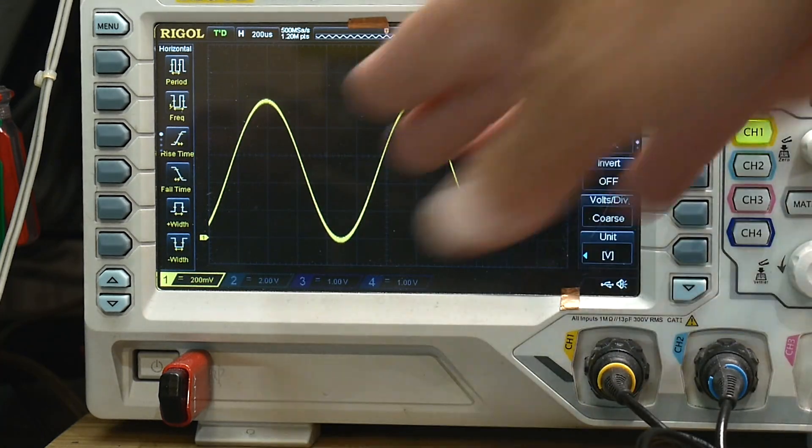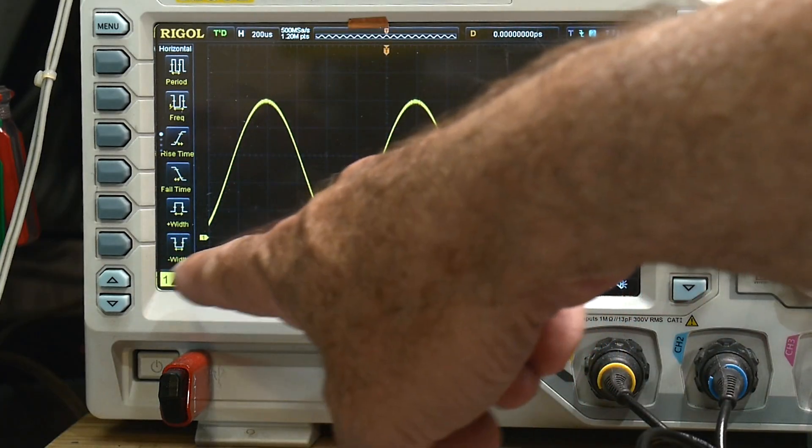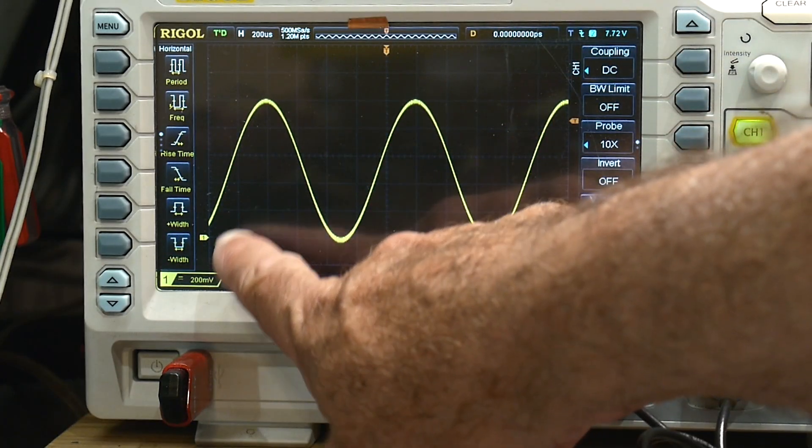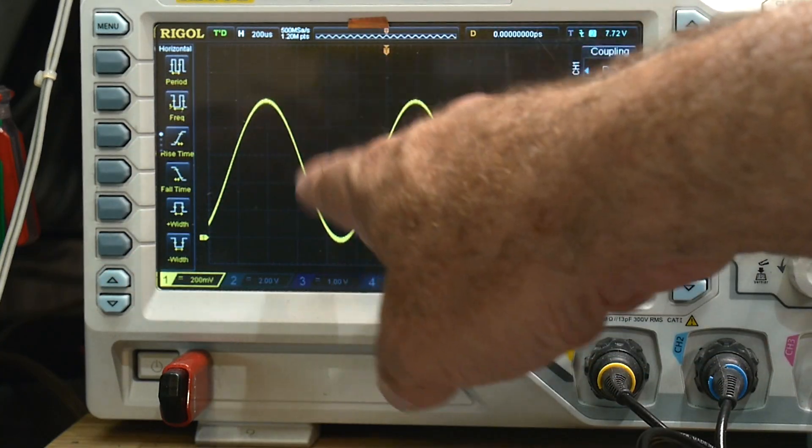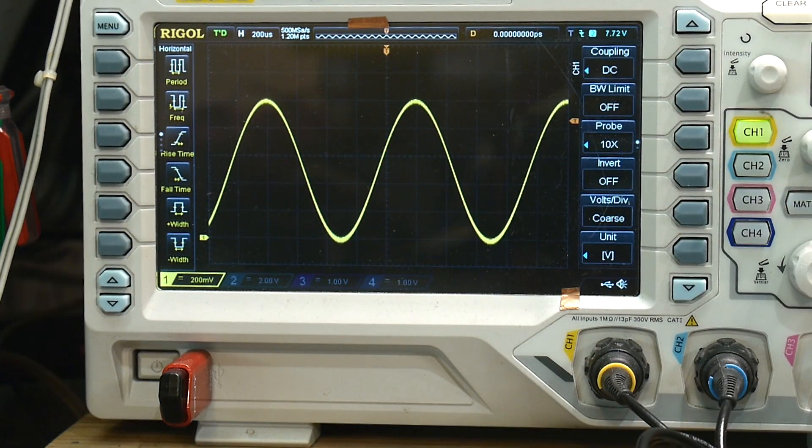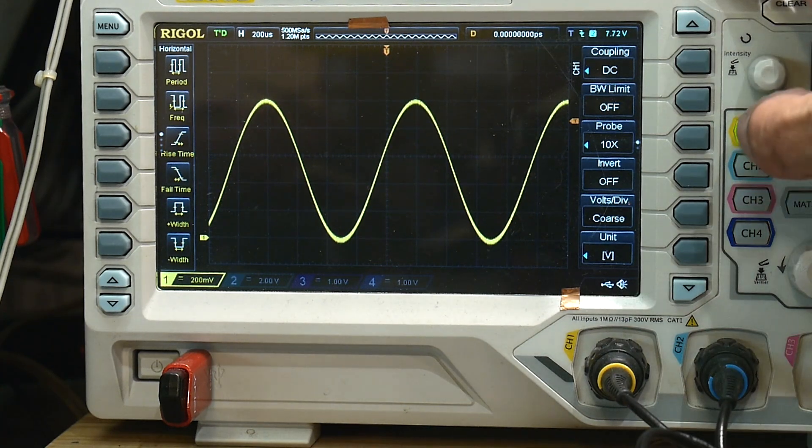So it doesn't go plus and minus. It only goes in the plus direction. So it goes 2, 4, 6, 8, 10. So it goes up one volt, and then down. So up a volt, down a volt, up a volt, down a volt, but it never goes below zero.